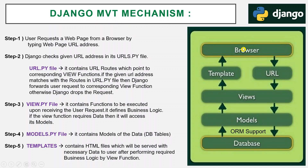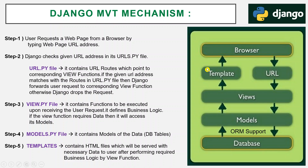To summarize the basic MVT mechanism: the browser requests a web page, Django checks the URL file for the page address pattern, and if Django finds that route, it routes the request to the corresponding view function. The view function processes the business logic, and if data is needed, it contacts the models. The models contact the database, which provides data back to the models, and the models provide data to the view function.